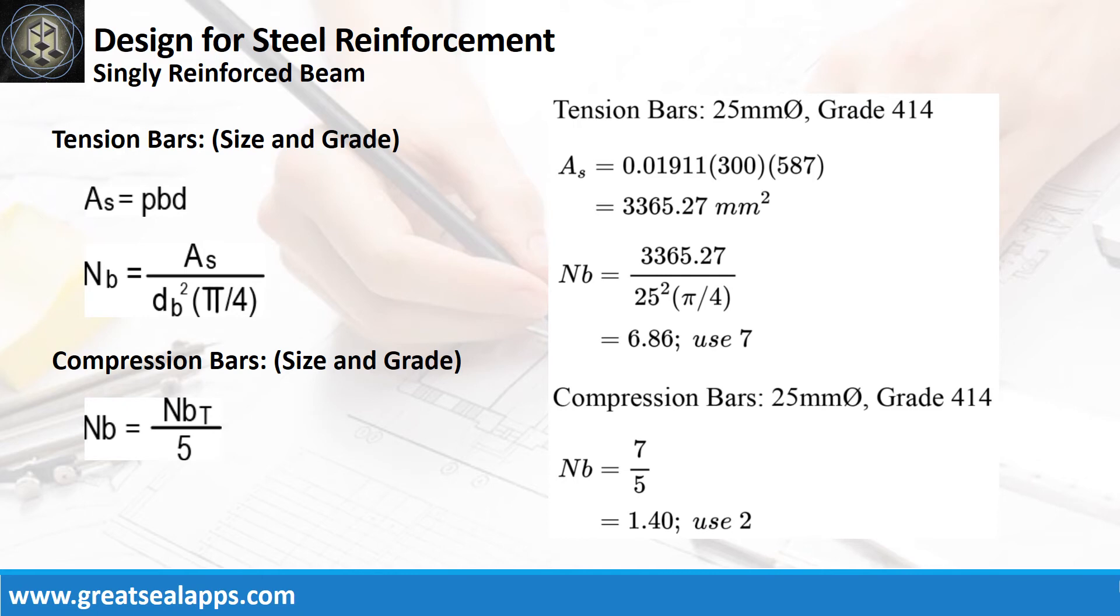Given ρ equals 0.01911, b equals 300 mm, and d equals 587 mm. The area of steel for tension bars is 3,365.27 square millimeters, and the number of bars for 25 mm bar is 7. The number of compression bars is 2.